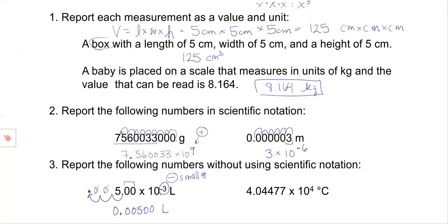That means I'm going to move my exponent to the right four places: one, two, three, four. So my number is 40447.7 degrees Celsius.